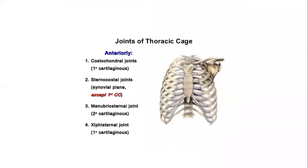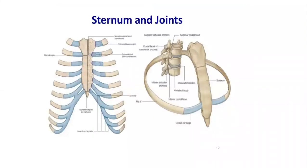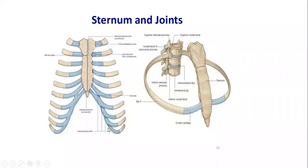The next joint is the interchondral joint, formed between the costal cartilages. This joint is formed between the costal cartilages of the 6th and 7th, 7th and 8th, and 8th and 9th ribs — these belong to the synovial plane variety and are bounded together by interchondral ligaments. If an articulation exists between the 9th and 10th costal cartilages, it is fibrous in nature. The rest of the interchondral joints belong to the synovial plane variety.